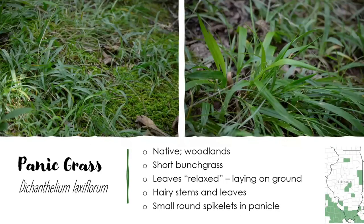Next up is Dichanthelium laxiflorum — not significant enough to have its own common name, so we just call it panic grass. It's a native of woodlands and is a short bunch grass, getting about six inches tall. It's very distinctive because of its habit — the way those leaves form a dense bunch and look relaxed. I learned this grass as Dichanthelium 'relaxaflorum' because it looks relaxed. It does have hairy stems and leaves, and then that characteristic panicle of spikelets. Start looking when you're out hiking in southernmost Illinois and you will start to see this clump of grass everywhere in the woods.